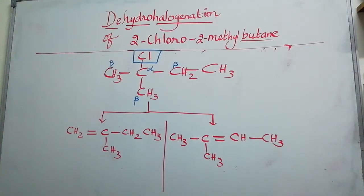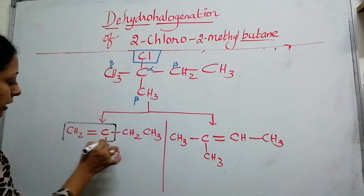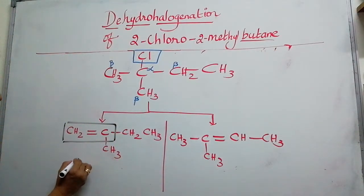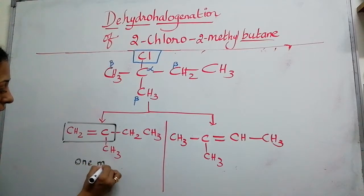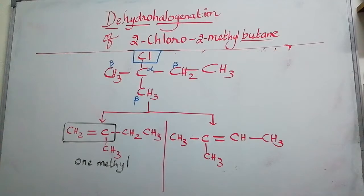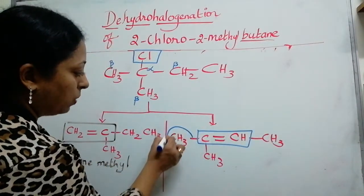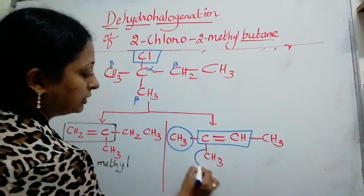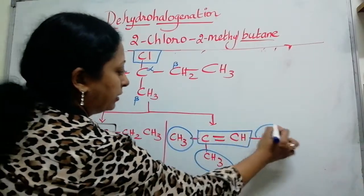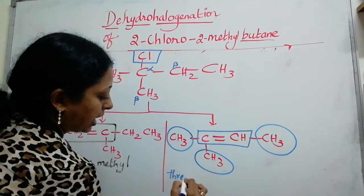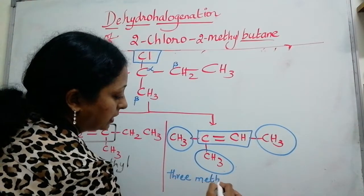Now, if I look at this particular structure and block the double bond, see here, if I block the double bond, I find one methyl group attached to the carbon-carbon double bond. In this structure, there is only one methyl group attached to the carbon-carbon double bond. But if I block this carbon-carbon double bond, I find one methyl group, there is second one and three methyl groups are attached to this carbon-carbon double bond.